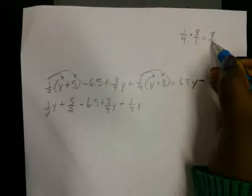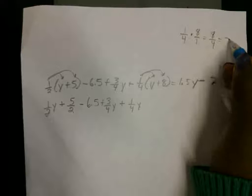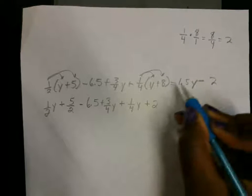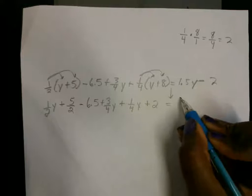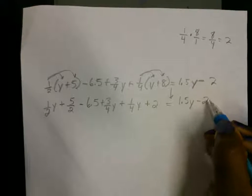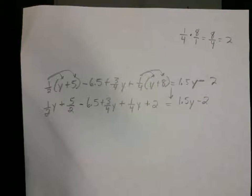That's going to be 8 over 4. Eight divided by 4 gives you 2. So this is going to be plus 2 here. Bring down the equal, bring down the 1.5y minus the 2. So distributive property came first. Now, after we use distributive property, we're going to combine terms that are alike.